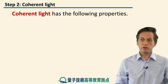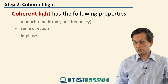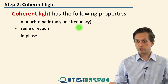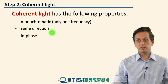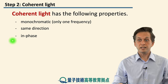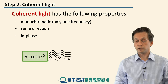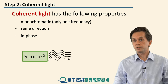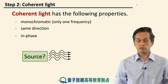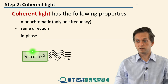On the other hand, coherent light is the exact opposite of incoherent light. It is monochromatic, which means it only has a component of one frequency, it travels in the same direction, and it is in phase. So the question now is: what device outputs such light? We saw a light bulb is a source of incoherent light, so what is the source of coherent light?